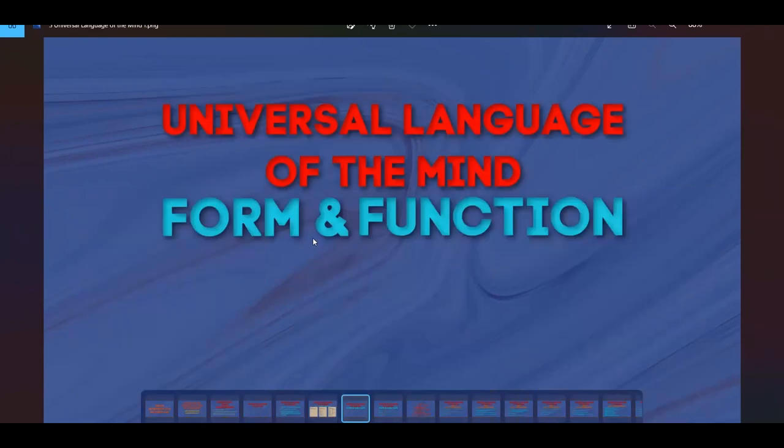All right. So this language is a language of form and function. Just like the English language is a language of words and sentences, math is a language of numbers and equations, music is a language of rhythms and melodies. This language of the mind is the language of form and function. What is the form, and what is the function of that form, and how does the consciousness function the same way? How does the mind function the same way?